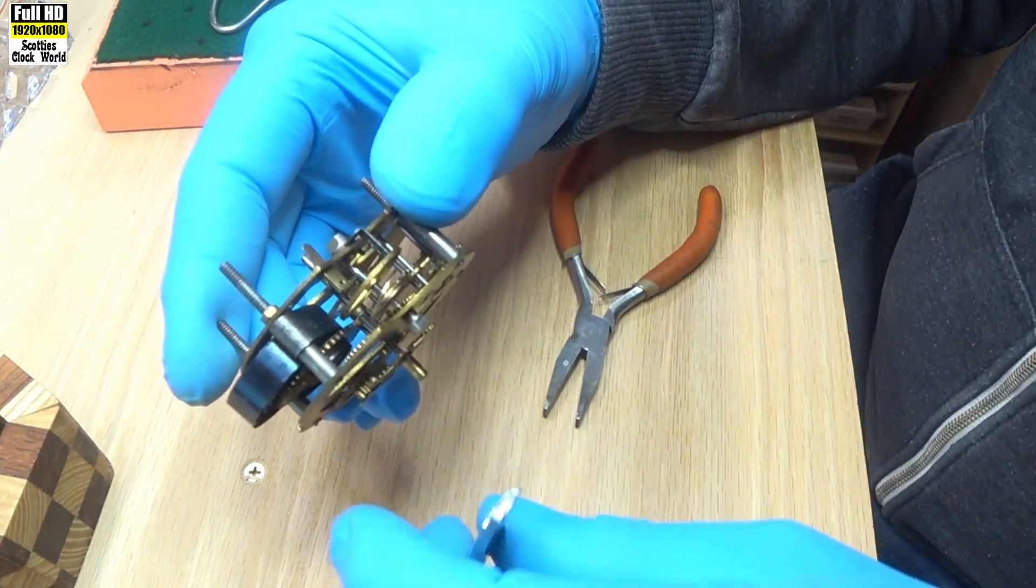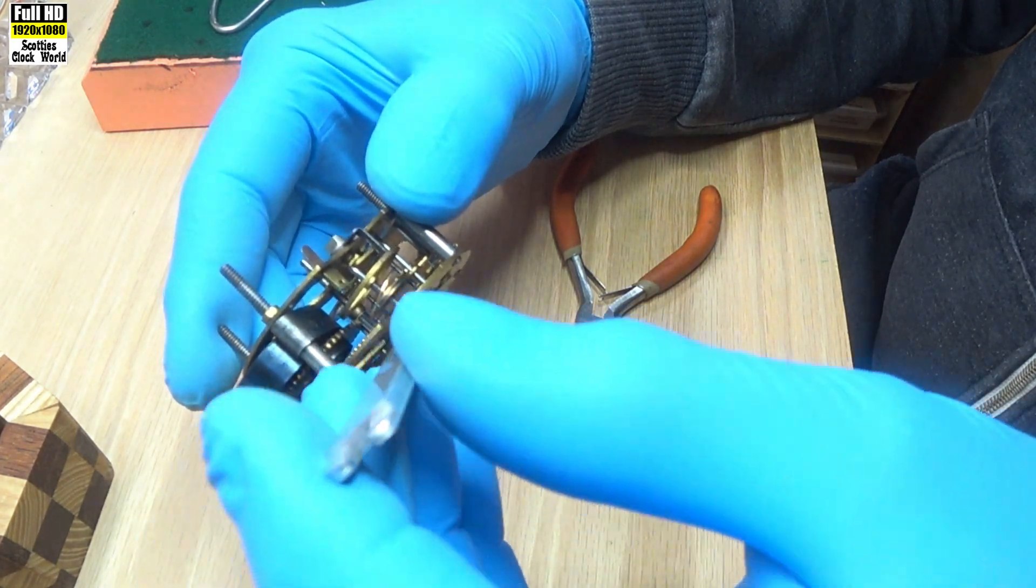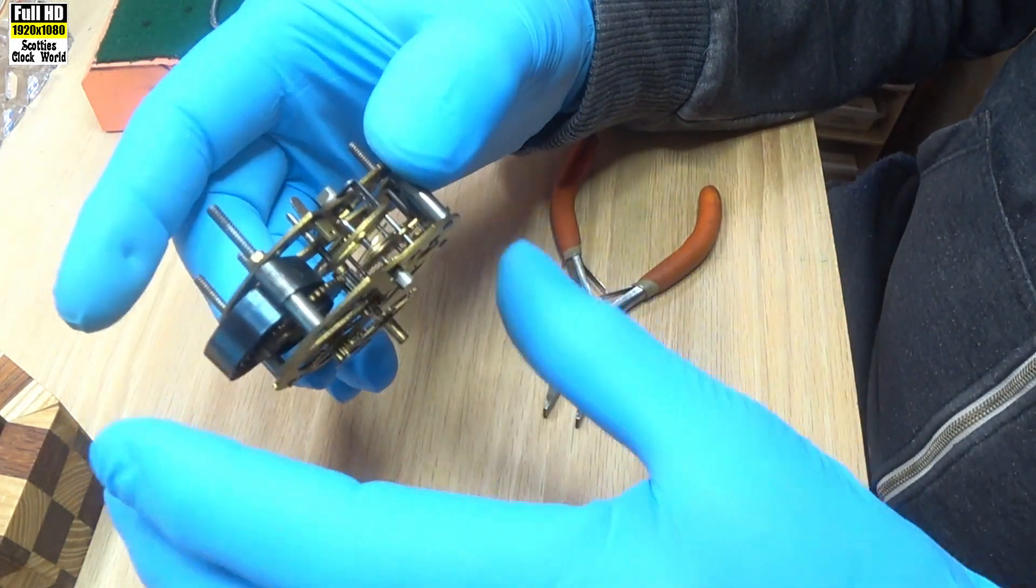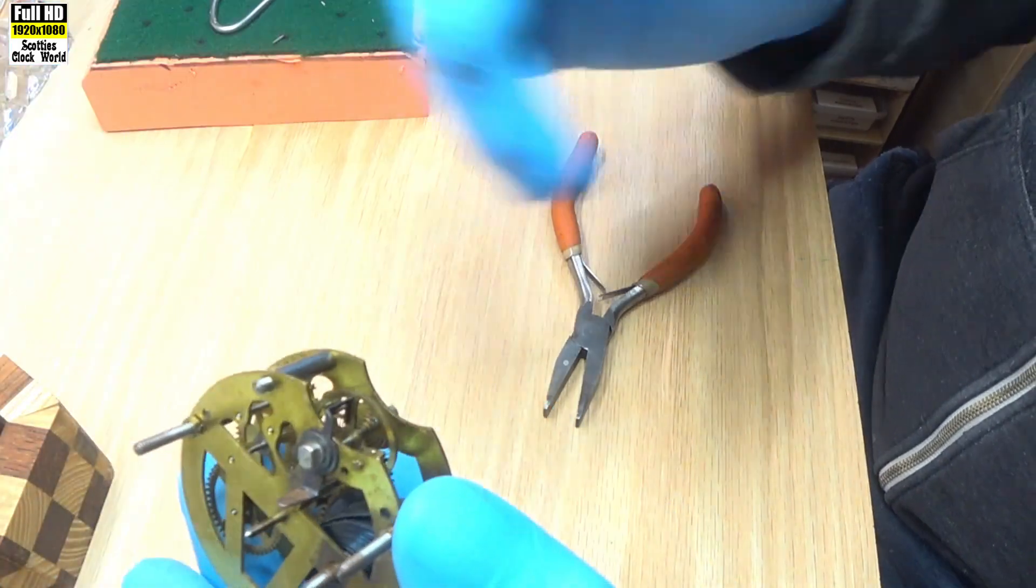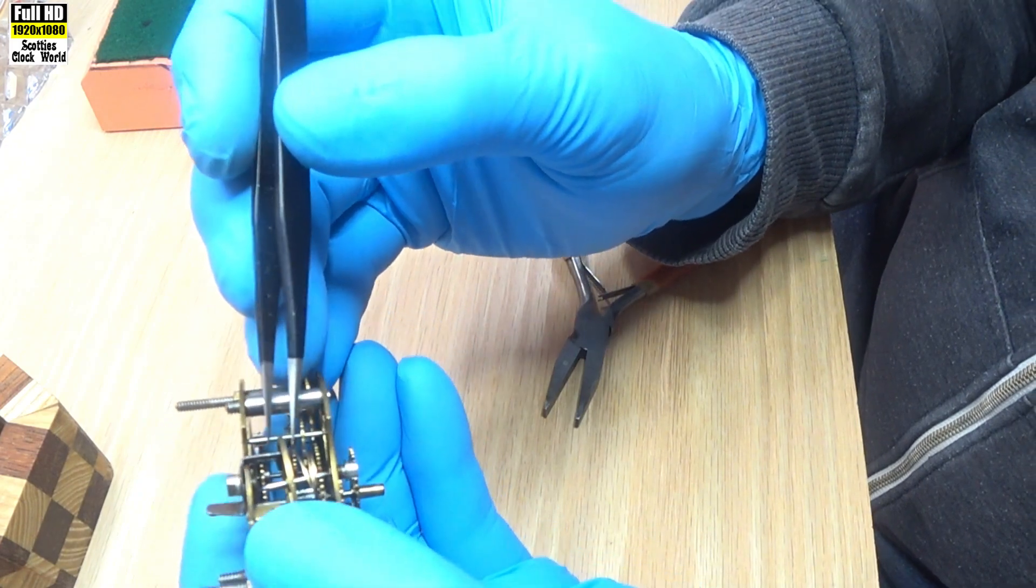As we're tightening it, we can see the pivot on the balance staff getting closer to where we want it to be. It's getting pretty close now. I'll see how we're going.